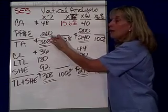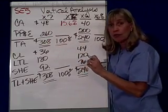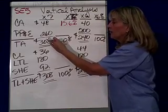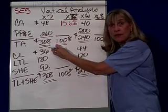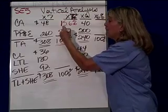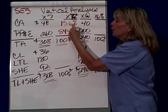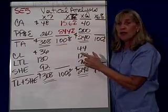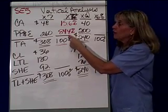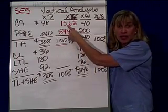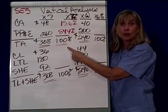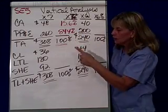Property, plant, and equipment as a proportion or fraction of total assets would be 260,000 divided by 308,000, or 84.4%. Notice that property, plant, and equipment as a proportion of assets and current assets as a proportion of assets have to tie back to 100%.